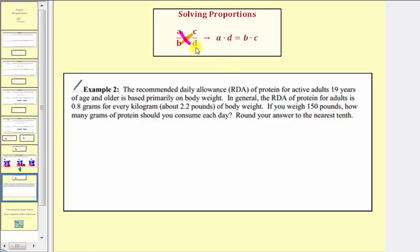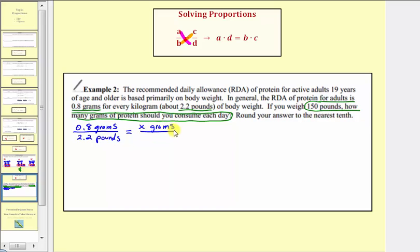So we'll solve this problem using a proportion where we'll set two rates equal to each other. We'll begin by setting up the known rate from the given information that the RDA is 0.8 grams of protein per 2.2 pounds of body weight. We're using pounds here because the question involves pounds. So again, our first rate is 0.8 grams of protein per 2.2 pounds of body weight. Now for the second rate, we'll have one unknown value. Notice how our goal here is to determine if a person weighs 150 pounds, how many grams of protein should they consume? So the unknown is the number of grams of protein. Let's let x equal the grams of protein. So we'll have x grams of protein per 150 pounds.